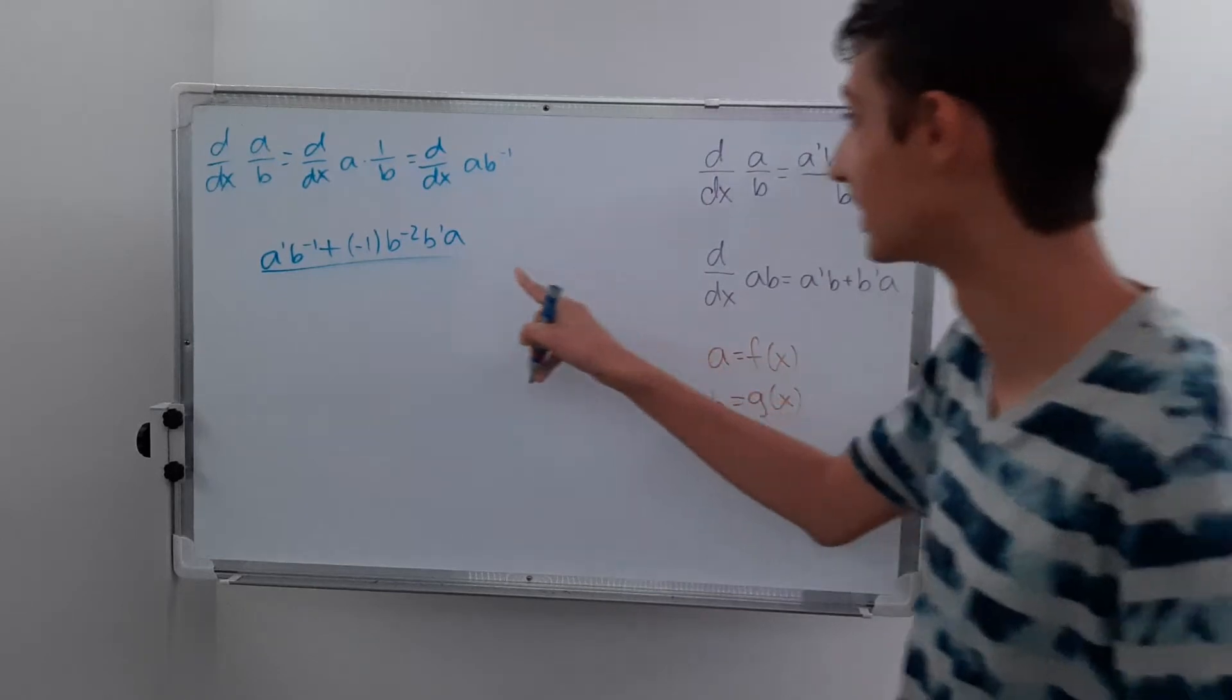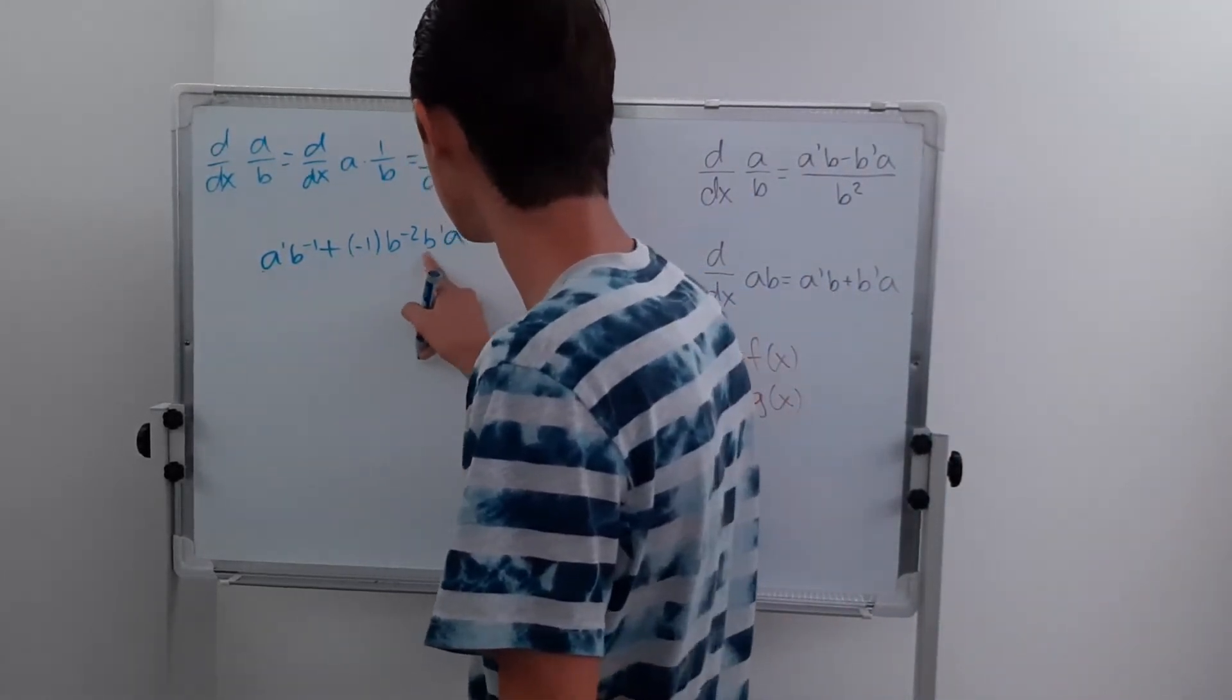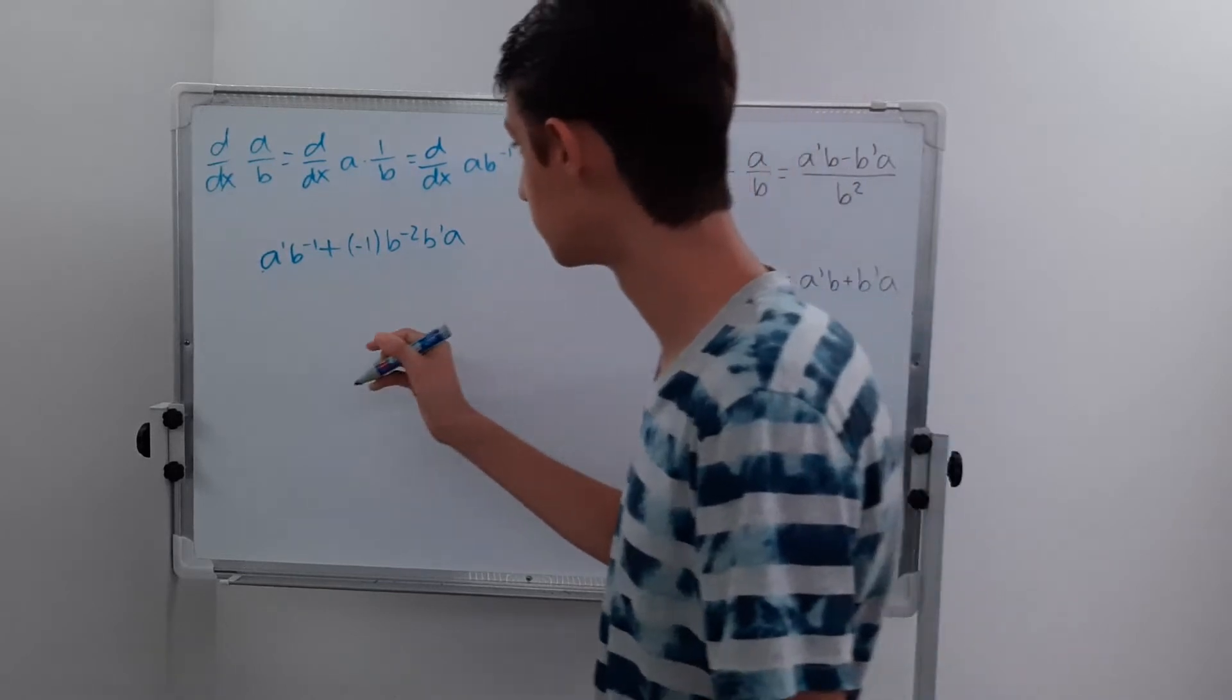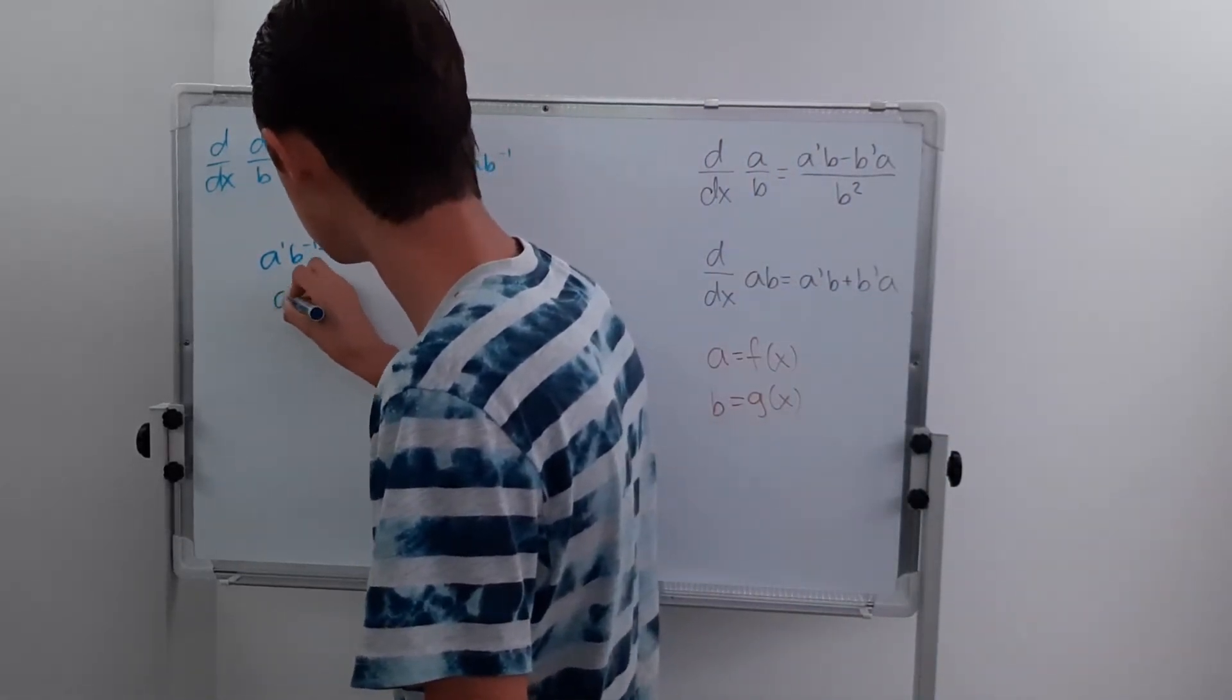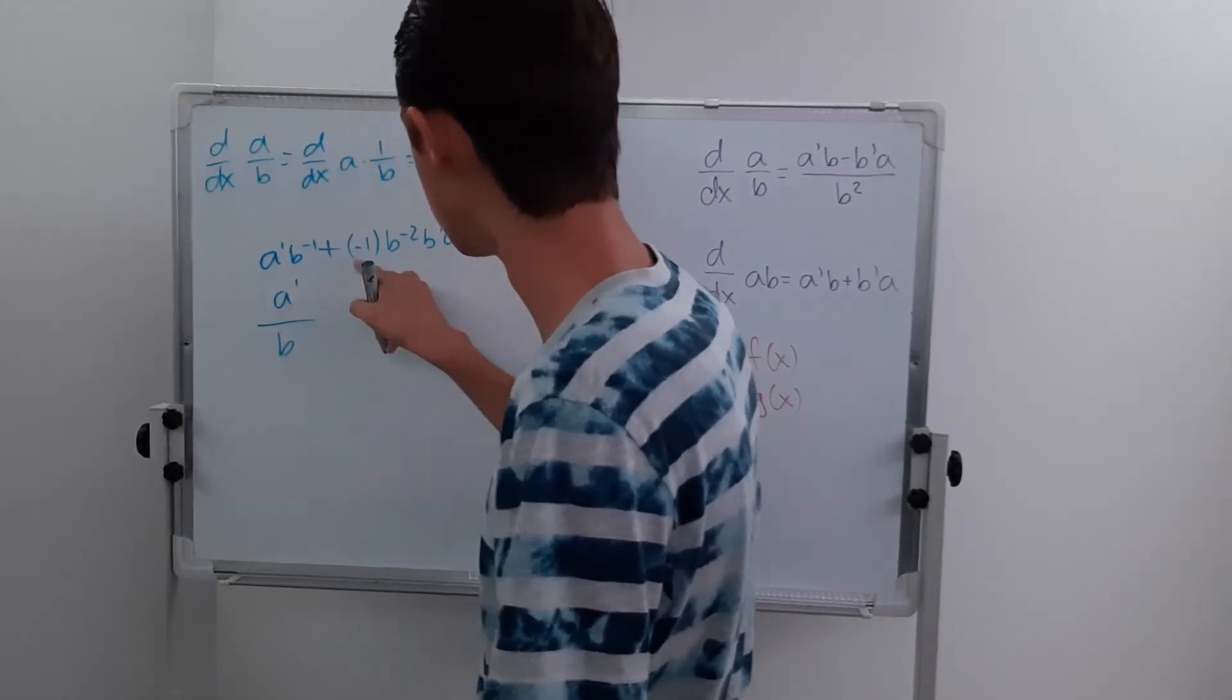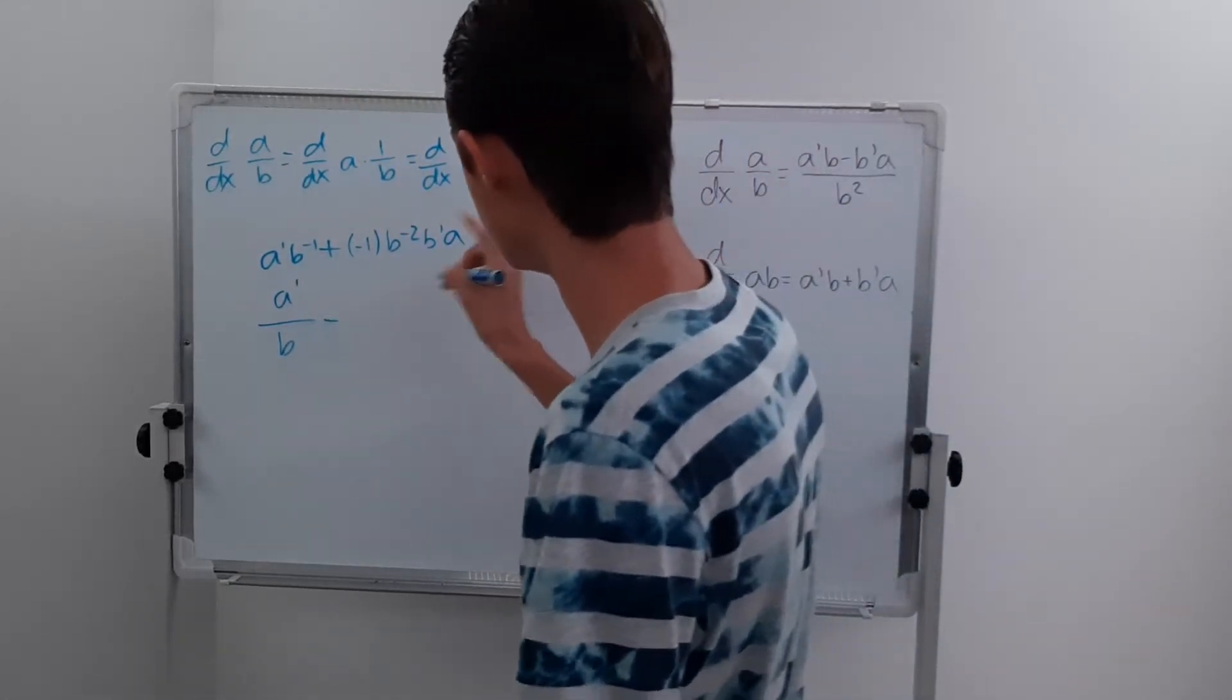This is not the quotient rule, this is the product rule. And so we have this b to the negative 1 and this b to the negative 2, so we can turn this into a division. So this is all just a prime over b, but actually it's a minus because we have a minus there, so it's minus b prime a over b squared.